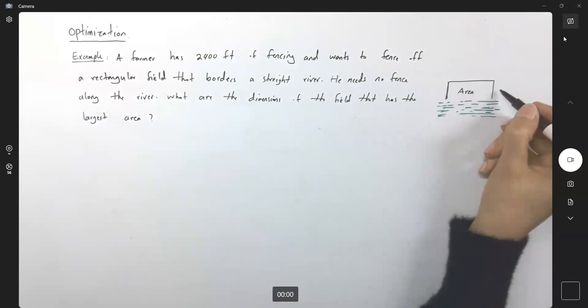So let us begin. Suppose this side is x, and since you have a rectangular border, x and x are the same. And suppose this side is just y.